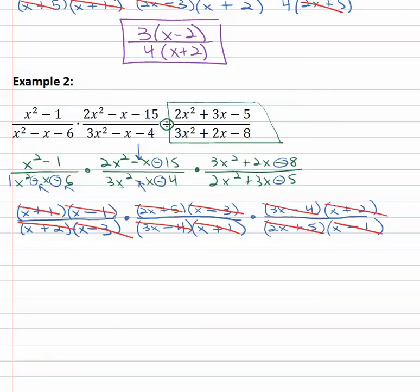When everything divides out, what's left? Remember, anything divided by itself is one. So if everything divides out there's a one left in the numerator and a one left in the denominator — we have one over one, which reduces to just one. One over one is not fully reduced; we have to reduce it all the way to just one. So for multiplying and dividing in the same problem, it's just a longer version of the same process: factor and divide out common factors.